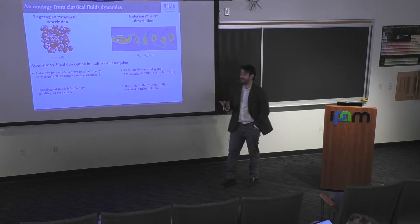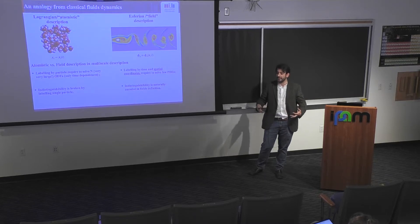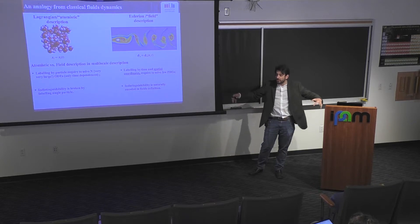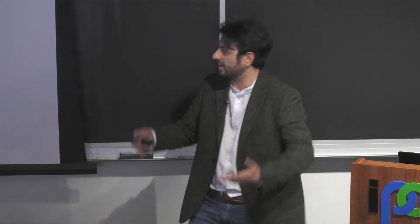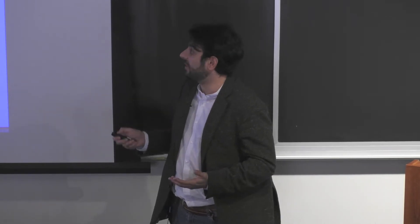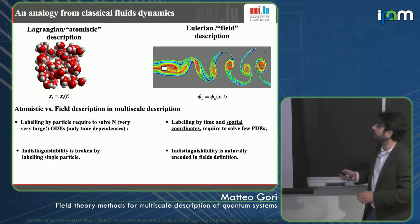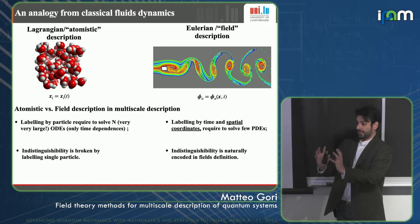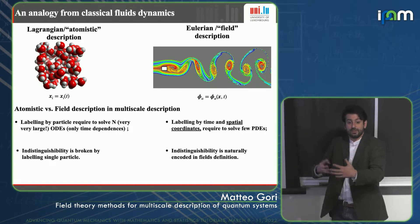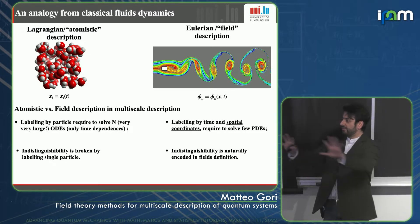Let's start from a classical analogy when dealing with a large number of atoms — the atomistic conundrum. In fluid mechanics, for a fluid we have two possible descriptions: a Lagrangian atomistic one, where we follow each atom, and the Eulerian field description, where we encode the properties of all these atoms into fields like density fields or velocity fields — we are fixed and see the field evolve.